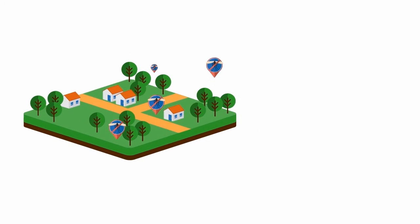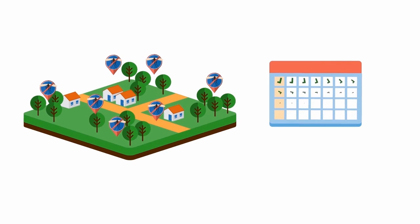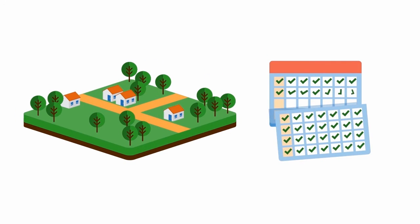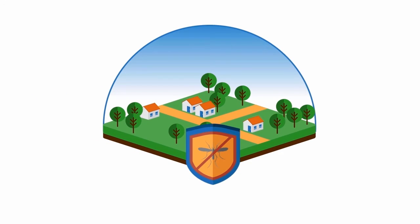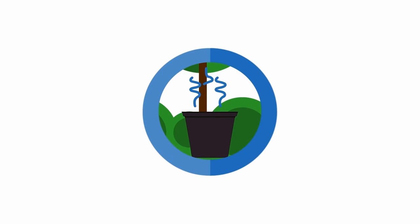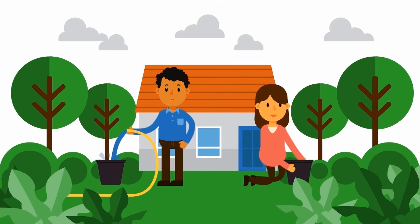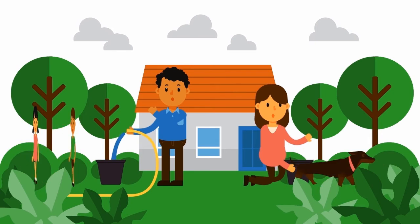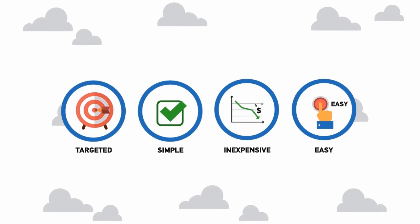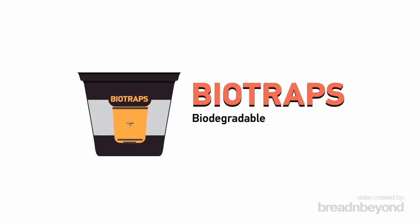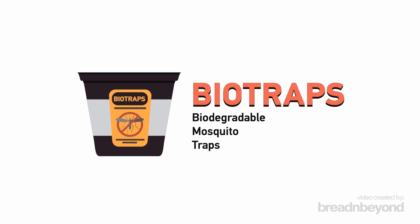Since mosquitoes travel only a short distance over their whole life, the mosquito population in a region will begin to decrease immediately and will be decimated after four to six weeks, creating a mosquito shield around your home, neighborhood, or community. Add water to traps if evaporation occurs and replace every four to six weeks with new biotraps to keep reducing mosquitoes in your area. Biodegradable mosquito traps allow every person to help prevent the spread of mosquito-borne disease.